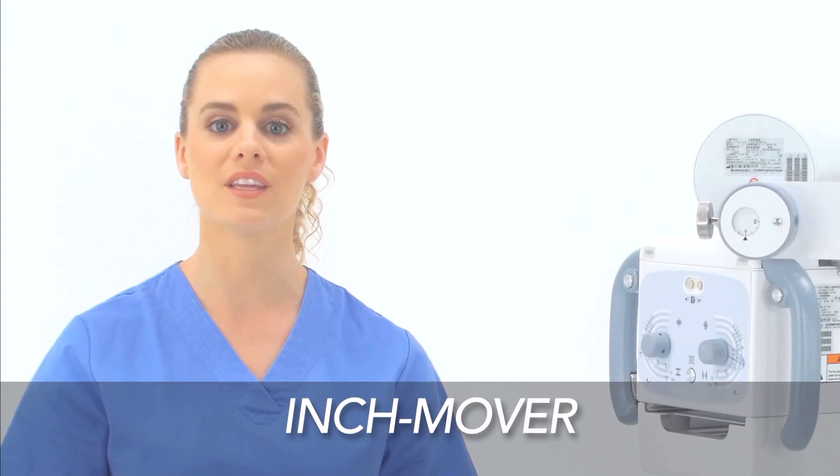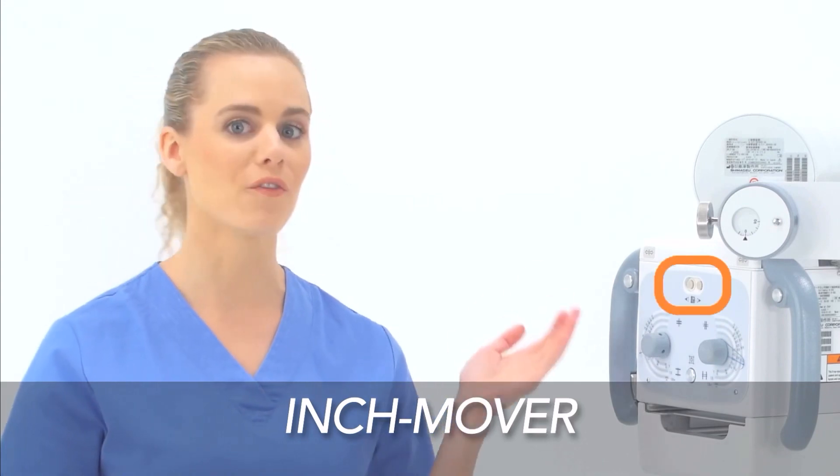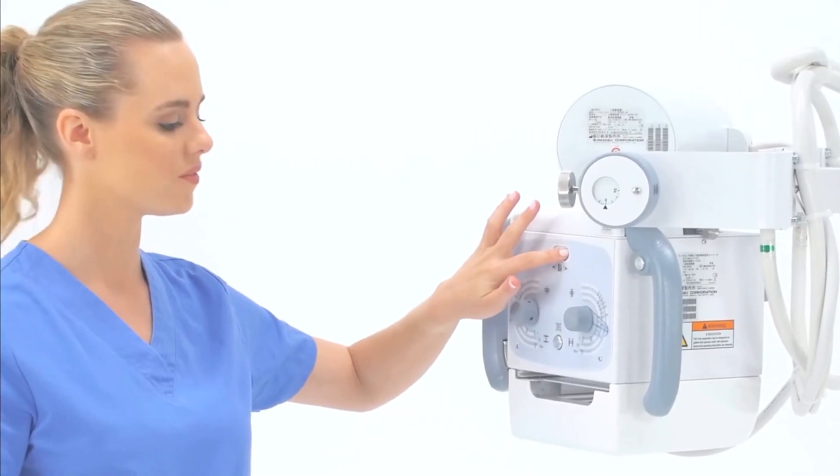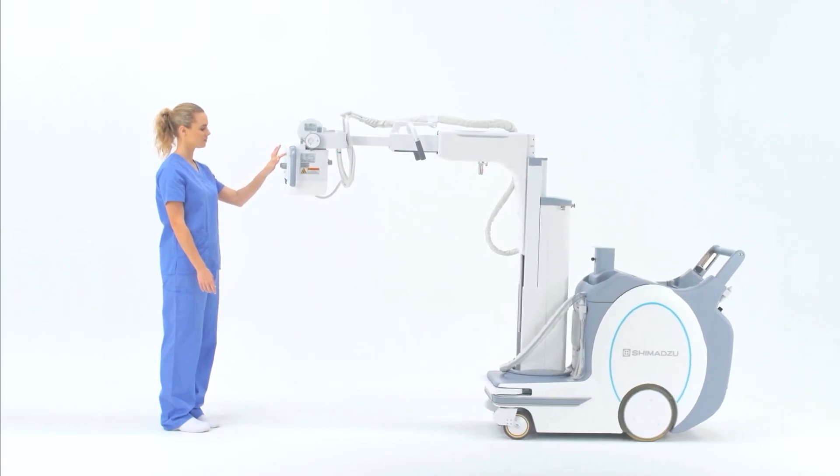If you find yourself in a tight area and need to move the MX-8 mobile system a few inches forward or backward, there is a feature you can use called the inch mover. Located on the front face of the collimator, inch mover allows you to move the portable a few inches forward or backward without having to return to the drive handle.